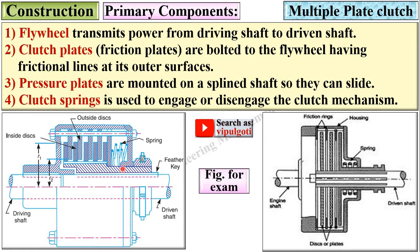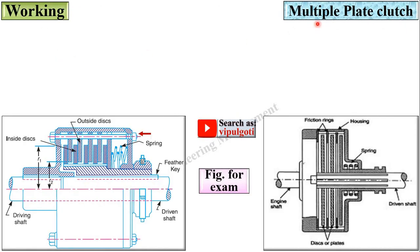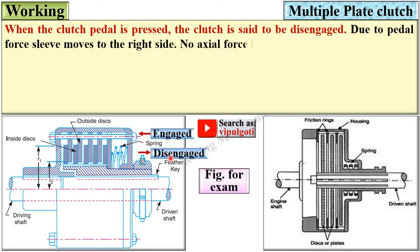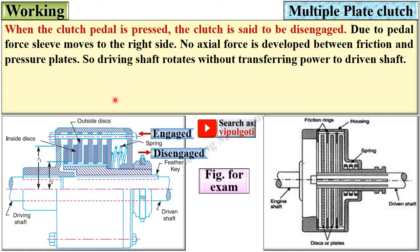Clutch springs are used to engage or disengage the clutch mechanism. When the clutch pedal is pressed, the clutch is said to be disengaged. Due to the pedal force, the sleeve moves to the right side, so no axial force is developed between the friction plates and pressure plates. This means the driving shaft rotates without transferring power to the driven shaft, and you can see the gaps indicating the disengaged position.